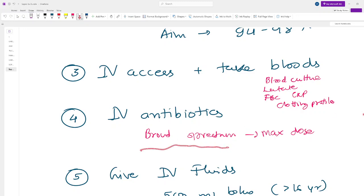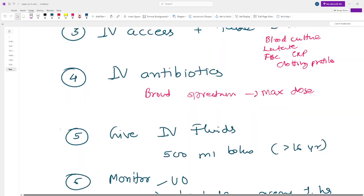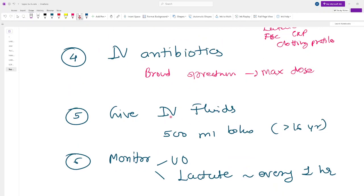Number five is give IV fluid. The initial bolus should be 500 ml of normal saline if the patient is more than 16 years old.